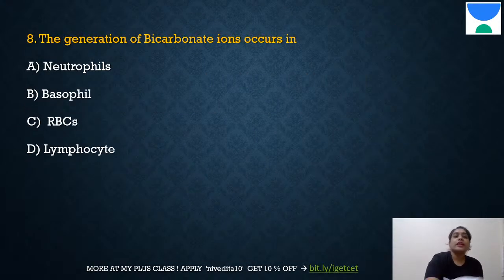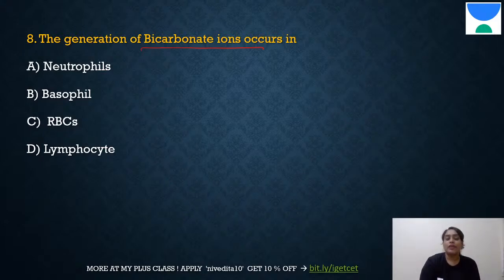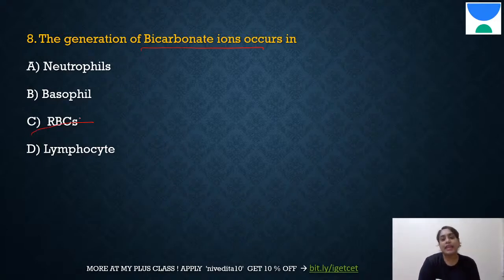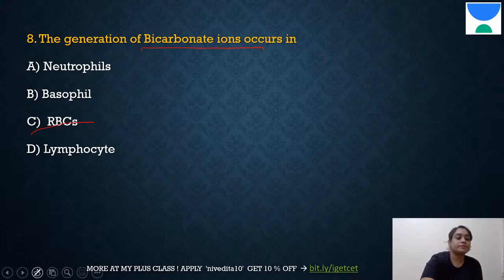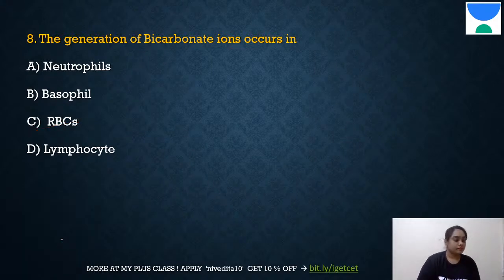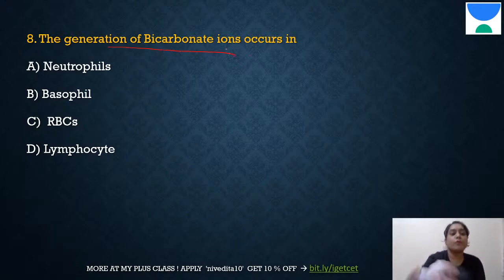Question 8: Generation of bicarbonate ions occurs in — the answer is C: RBCs, because RBCs contain carbonic anhydrase, the enzyme responsible for converting CO₂ and water into carbonic acid, which then breaks down into bicarbonate ions.